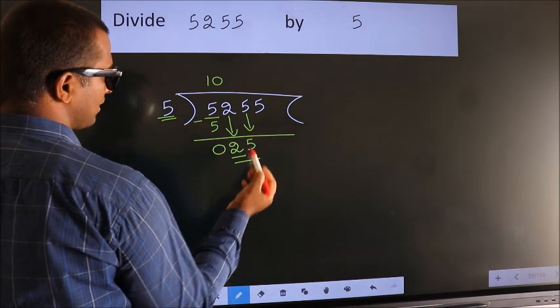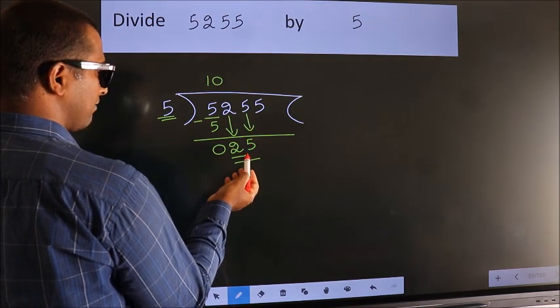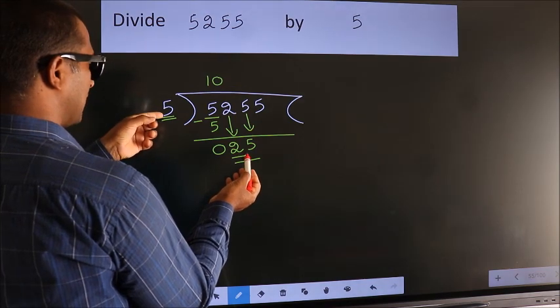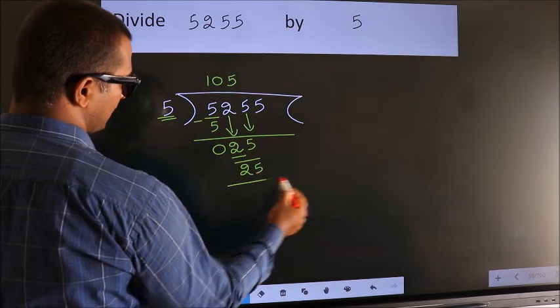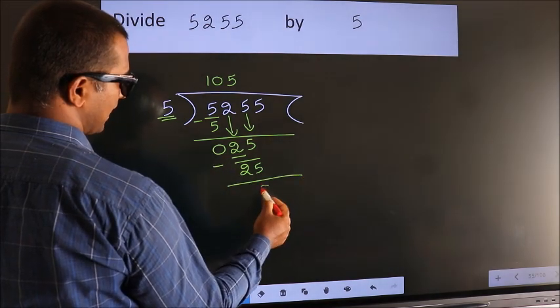So 25. When do we get 25? In the 5 table. 5 fives, 25. Now we subtract. We get 0.